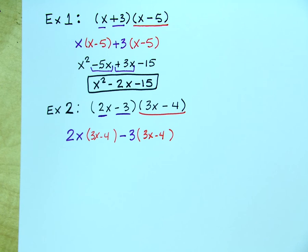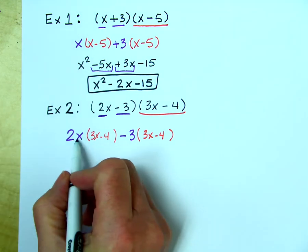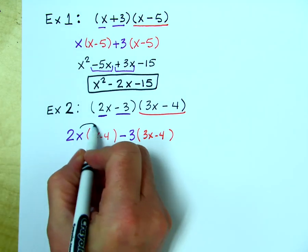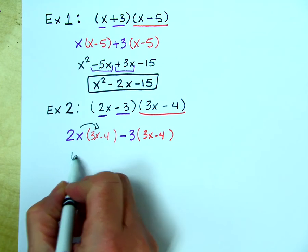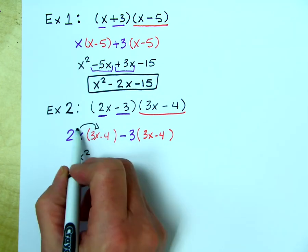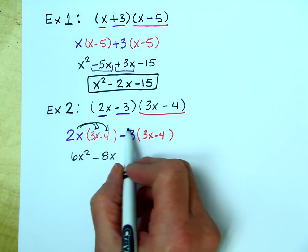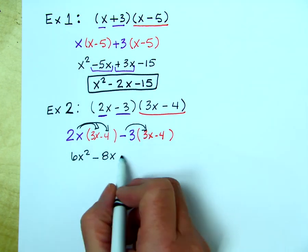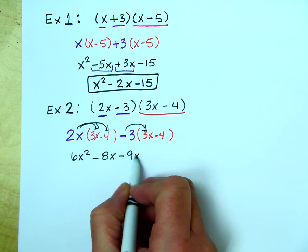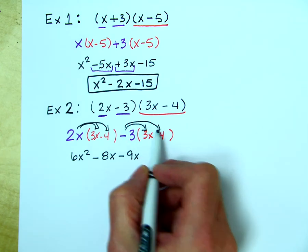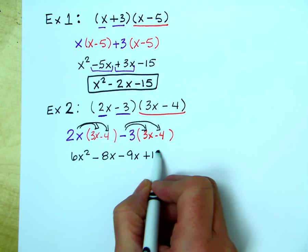So 2x times 3x is 6x squared, 2x times negative 4 is negative 8x, negative 3 times 3x is negative 9x, and negative 3 times negative 4 is positive 12.